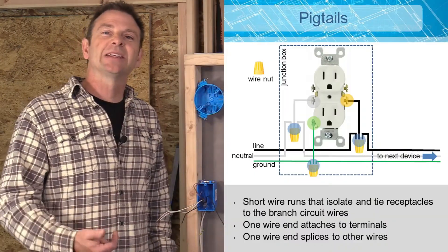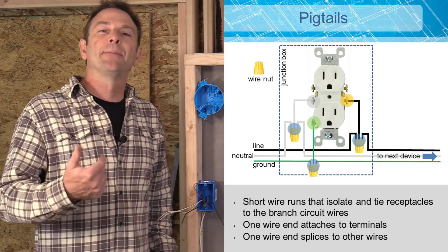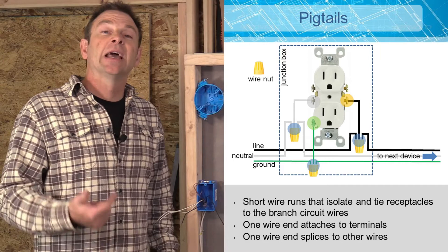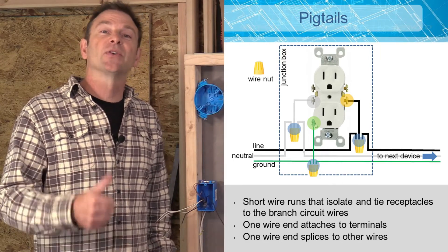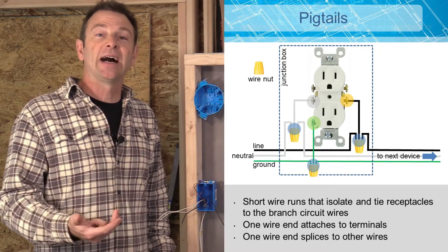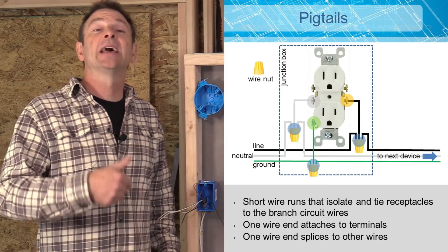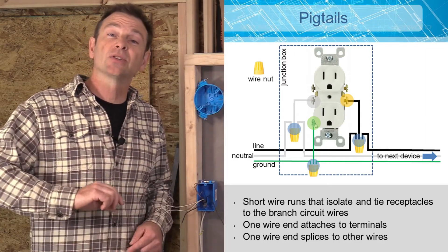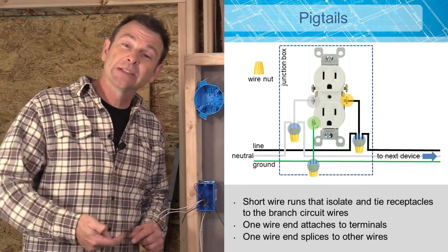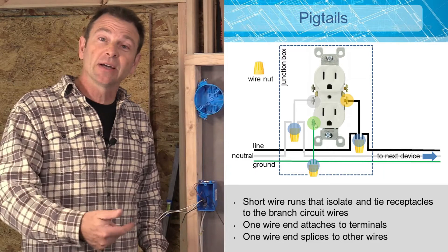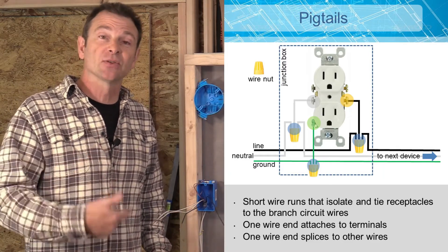On your screen, you see a schematic for a pigtail configuration for receptacle. As you see, there are short wires for your ground, neutral, and hot. And they're going to tie in with the wires that come into the box and then go out of the box. Those wires are going to get twisted all together and spliced with a wire nut. You're then going to put a hook on the end and then hook it on that single terminal.